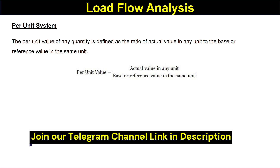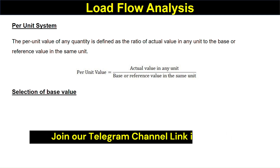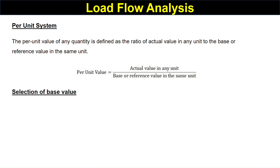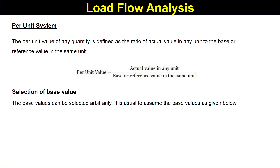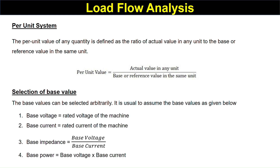To calculate the per unit value, we should first select a base. The base values can be selected arbitrarily. It is usual to assume the base voltage as given below. Base voltage is equal to the rated voltage of the machine.